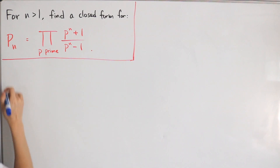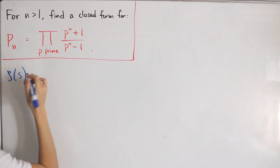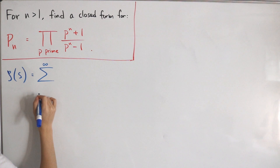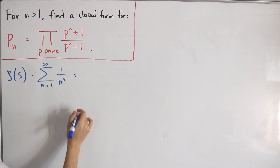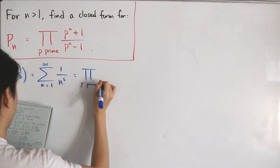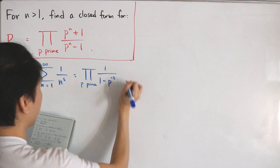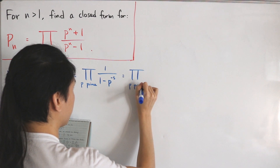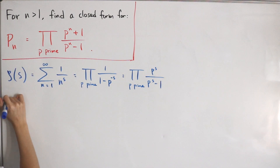Let's first write the definition of the Riemann zeta function. The Riemann zeta of s equals the infinite sum from n equals 1 of 1 over n^s, which can also be written as the Euler product over primes p of 1 divided by (1 minus p^(-s)). Simplifying further, that's the product over primes of p^s divided by (p^s minus 1).